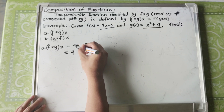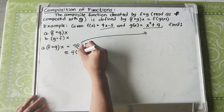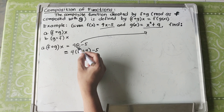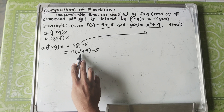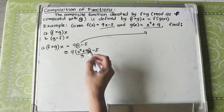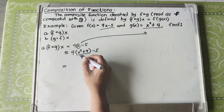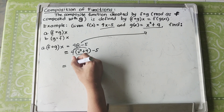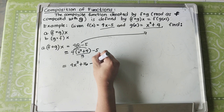In the substitution, we don't need to change anything from the equation of F — we simply substitute the value of X with the function of G. So X in F's formula is replaced by G, giving us 4 times (X squared plus 4) minus 5. Now let's simplify. Since we have a parenthesis, apply the distributive property: 4 times X squared is 4X squared, and 4 times 4 is 16. Copy minus 5.